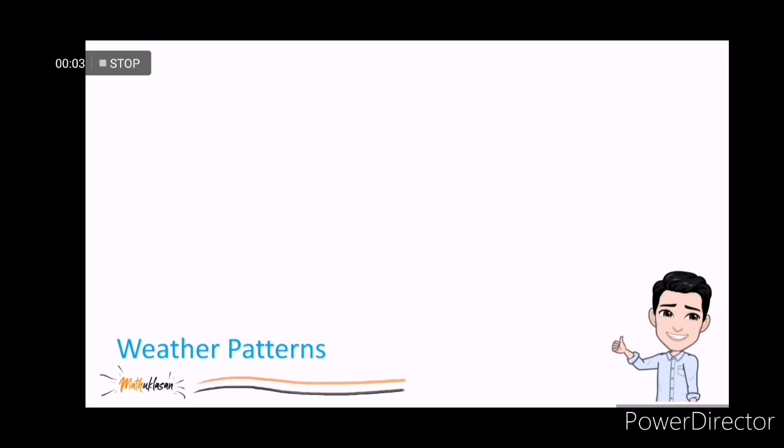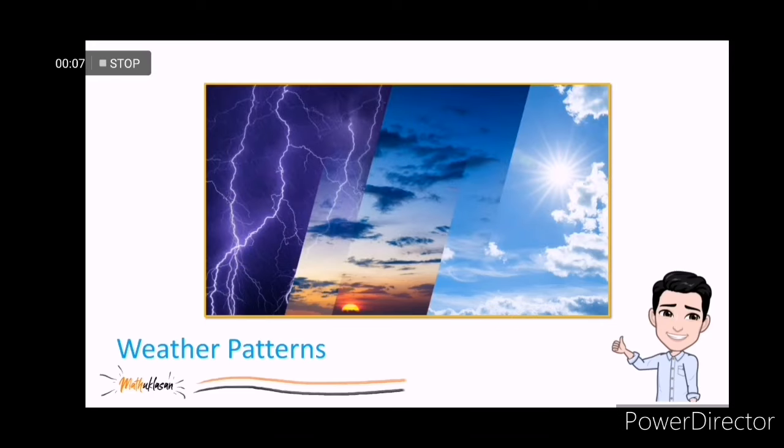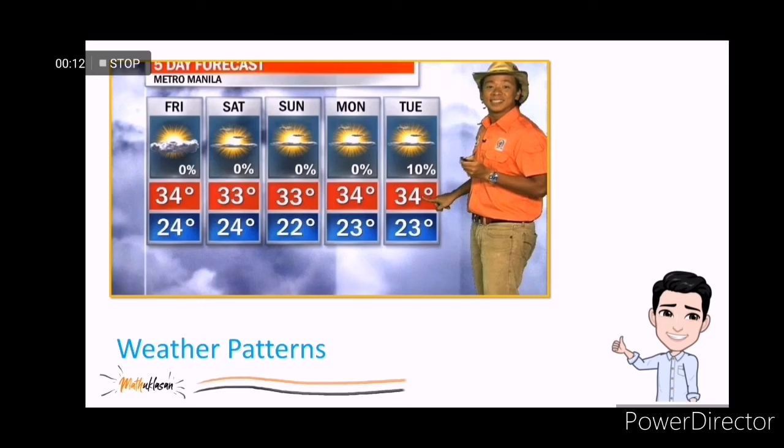Future is something that we can't predict. But how can the weather forecasters tell the possible weather conditions of the coming weeks? That's because of weather patterns. They were derived from the previous data that they had.